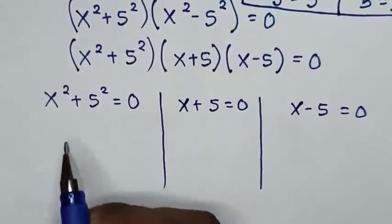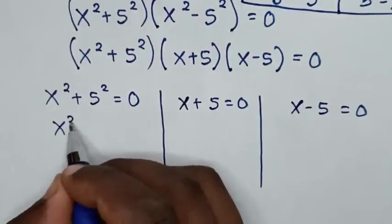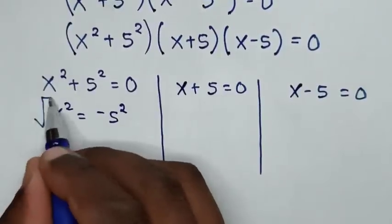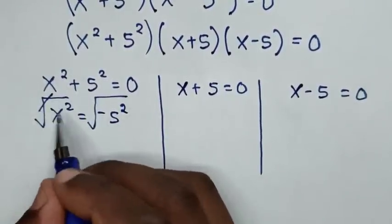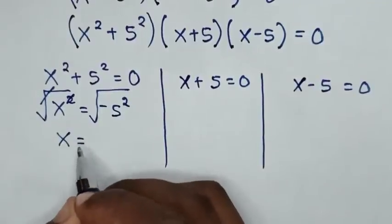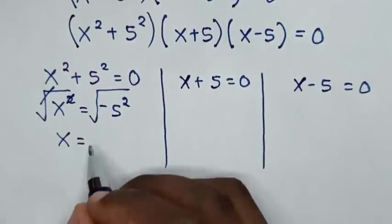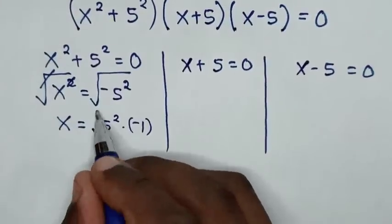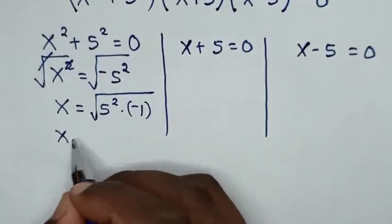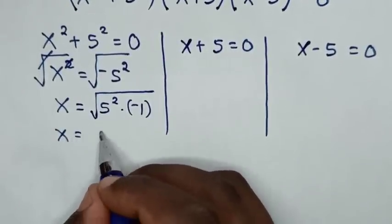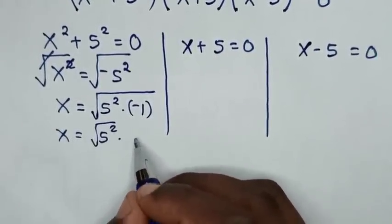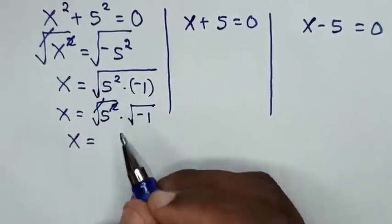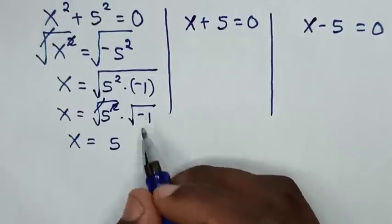From the first solution, we take 5 squared to the right side. So it will be x squared equals negative 5 squared. Then we apply square root on both sides — the square root cancels with the square. So x equals the square root of negative 5 squared, which is the same as 5 squared times negative 1. Applying the square root, it becomes 5 times the square root of negative 1, and square root of negative 1 is i. So x equals 5i.